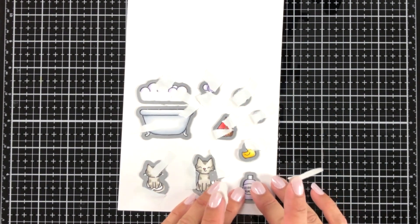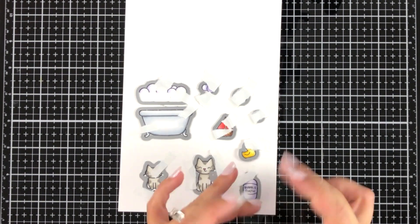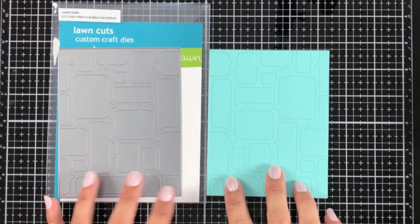Once I have everything colored I just use the coordinating dies, hold them in place with post-it tape, and run those through my die cut machine.